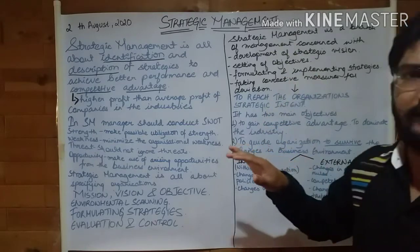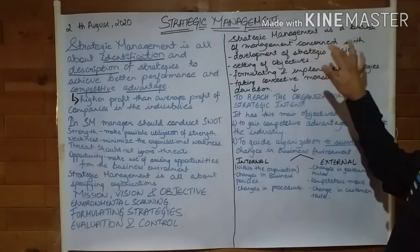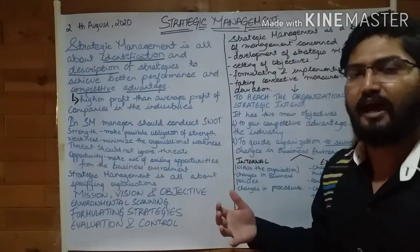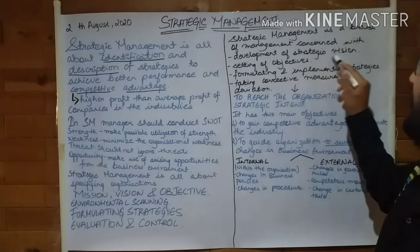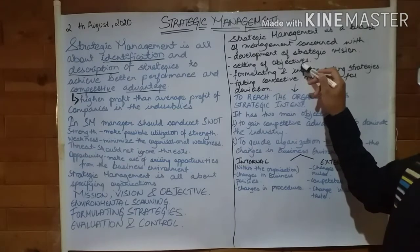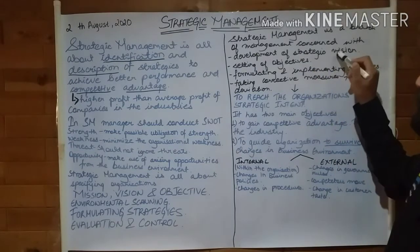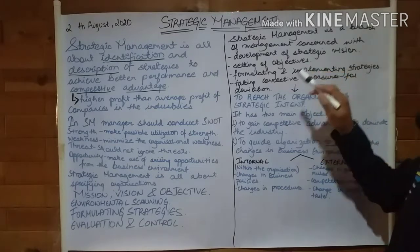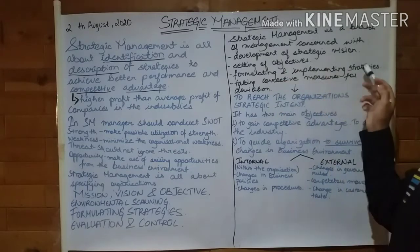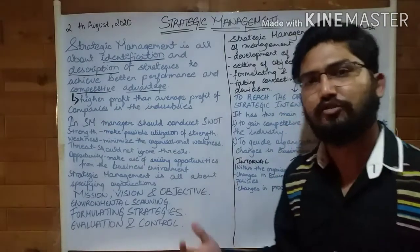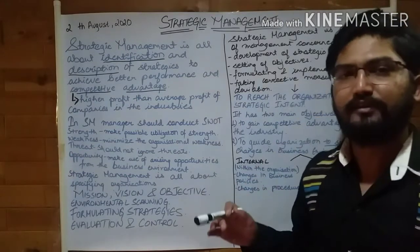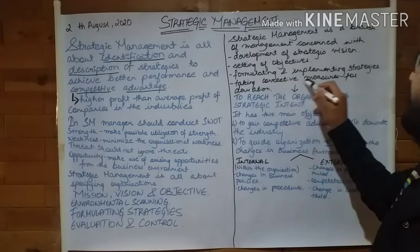Strategic management is a branch which is concerned with the development of a strategic vision. You will create a vision that you have to achieve. After that, you will create small objectives which will help you achieve the vision. Once you have formulated your objectives, you will be formulating and implementing strategies in your organization. Once you are done with this, you also have to take corrective actions.